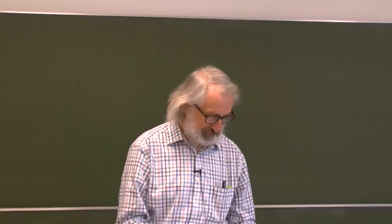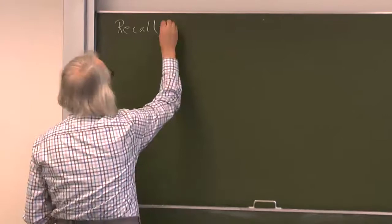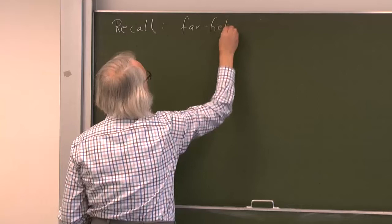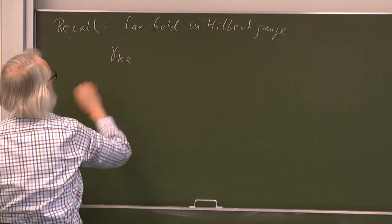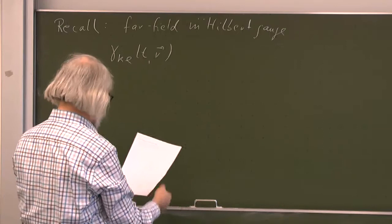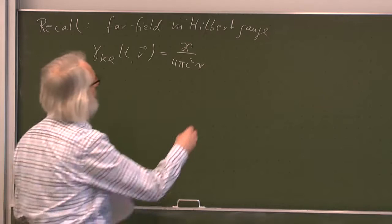Welcome back everyone. After some interruption of one and a half weeks or so, I hope you remember more or less what we have done in the last lectures. In particular, we have to recall what we did already three weeks ago, when we considered the far field, where we used the Hilbert gauge. This will be important. So the formula was gamma_kl — only spatial indices of t and r — with a certain pre-factor: kappa over 4 pi c squared r. So it falls off with 1 over r, of course.